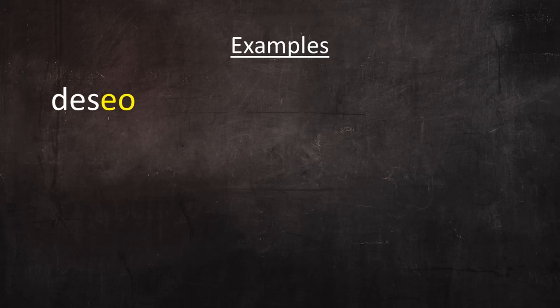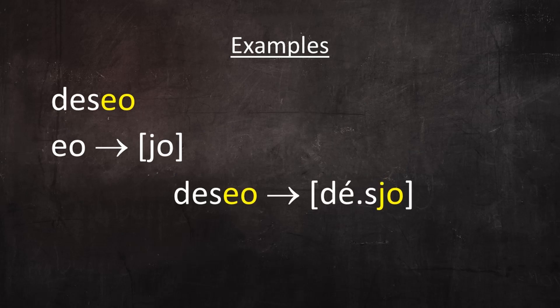The word deseo contains the hiatus EO. A non-native Spanish speaker who's overly enthusiastic about resolving hiatuses to diphthongs might try to convert this EO into YO. But there's a very big difference: in the original word the stress falls on the E, while in the converted version the stress cannot fall there since it would be the glide in a diphthong. In the converted word the stress must fall on a different vowel. Deseo versus *desyo.